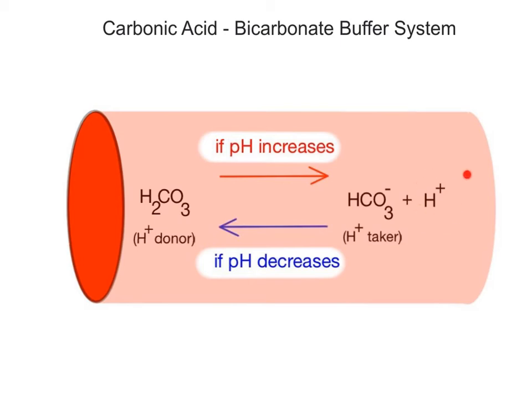The free hydrogen ions are now removed from the blood plasma and locked up in the structure of carbonic acid and no longer contribute to a drop in pH. So as the concentration of the hydrogen ions in the blood decreases, the pH increases.